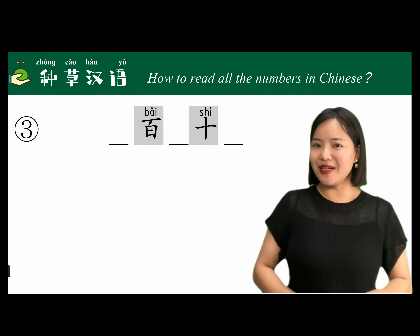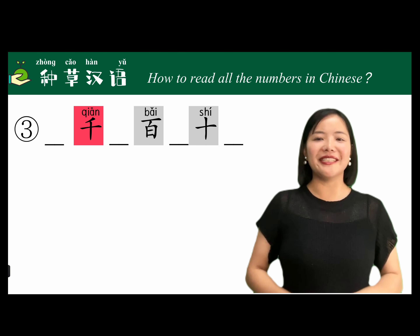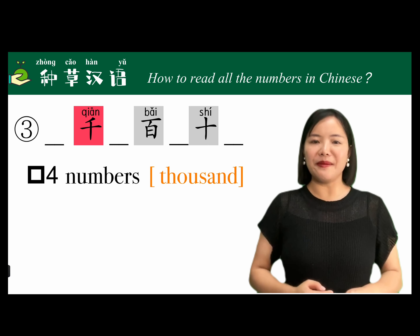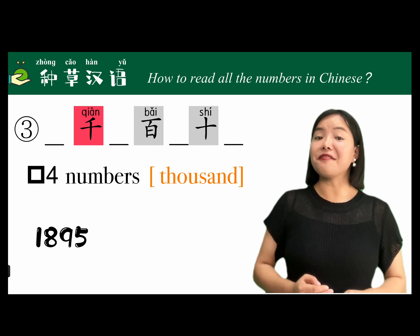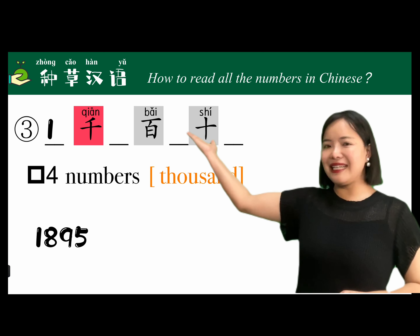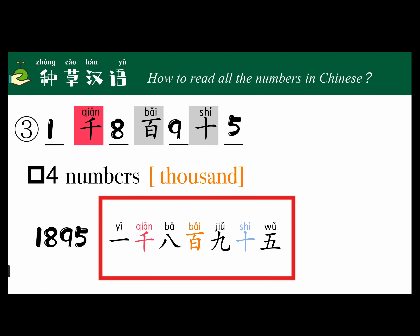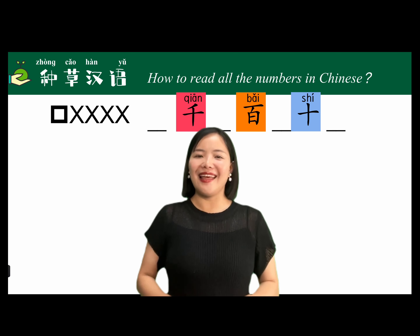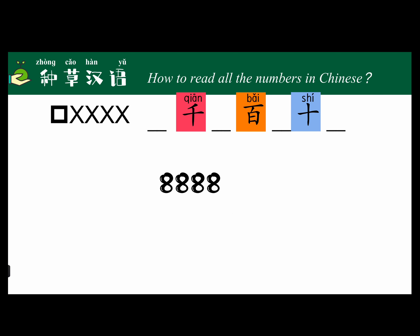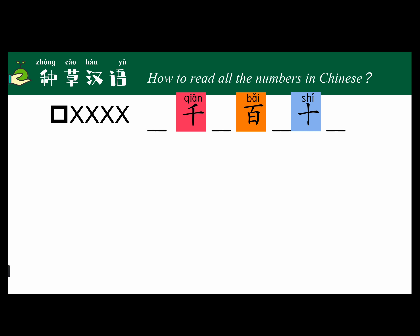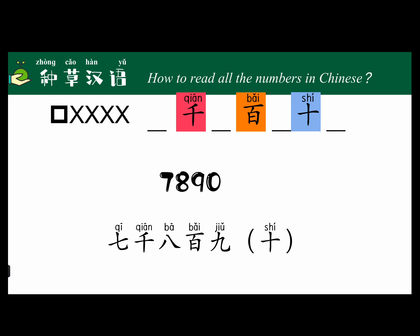The third word is 千 (qiān), which means thousand. When we say four-digit numbers, for example 1,895, we read it as 一千八百九十五 (yī qiān bā bǎi jiǔ shí wǔ). Let's practice more. 8,888 — the favorite number of Chinese people — is 八千八百八十八 (bā qiān bā bǎi bā shí bā).